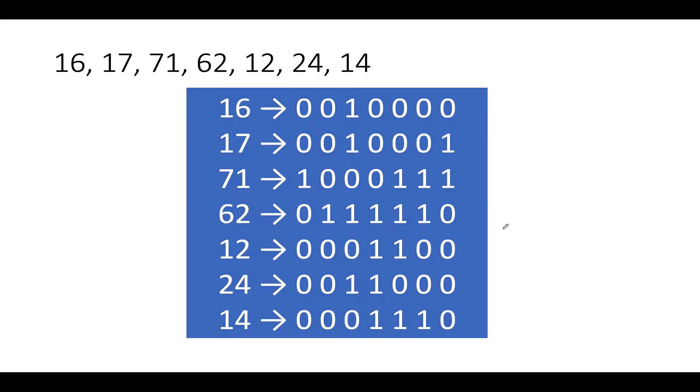So what I'm going to do, let's take the same example that was specified. We have elements at 16, 17, 71, 62, 12, 24, and 14. So first of all, I have represented all these numbers in their binary representation. So 16 is represented as this, 17 is represented as this, 71 is this, 62 is this, 12 is this, 24 is this, 14 is this.